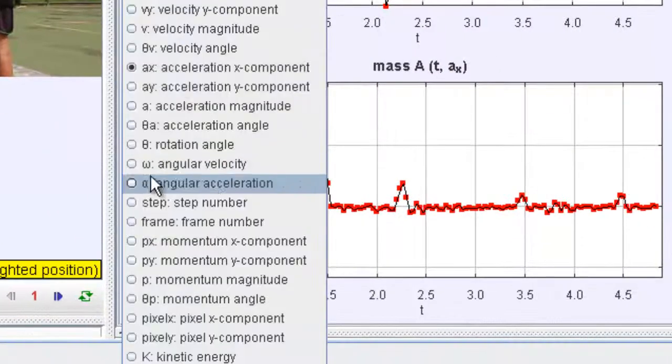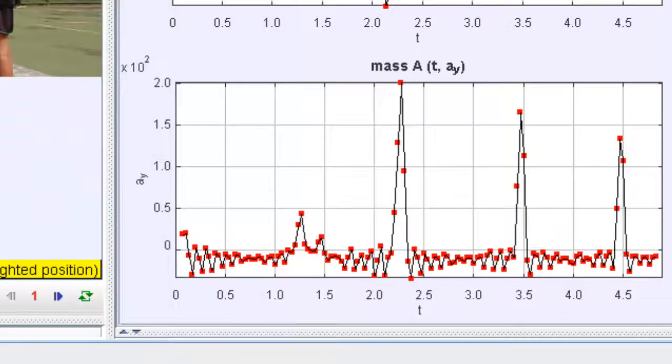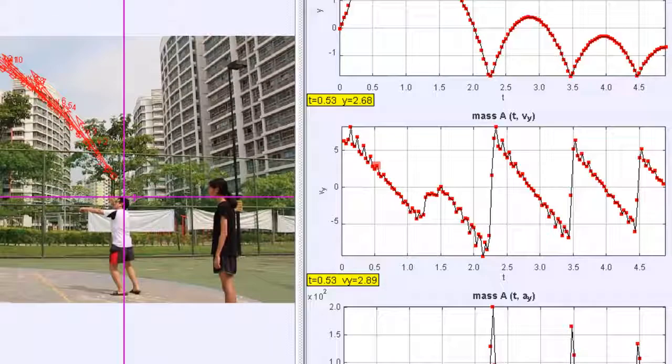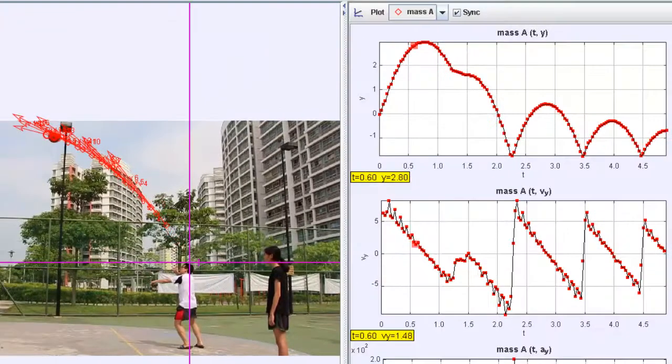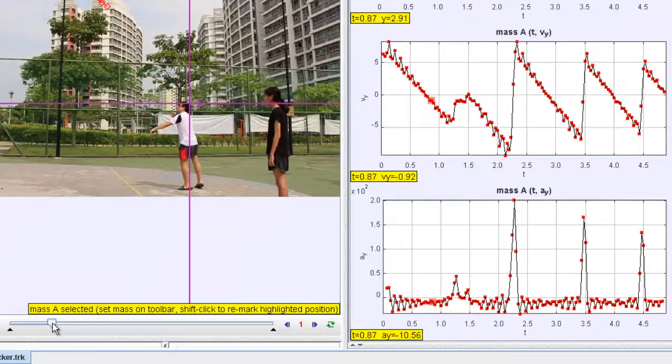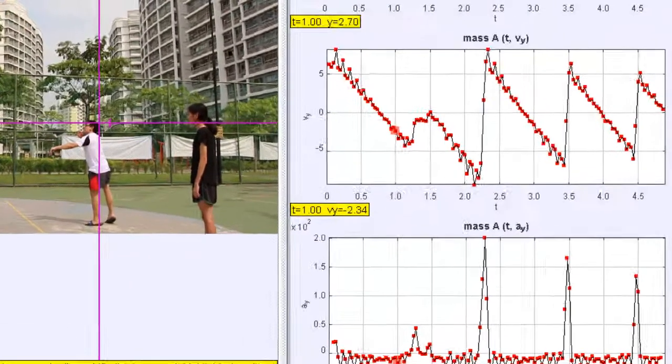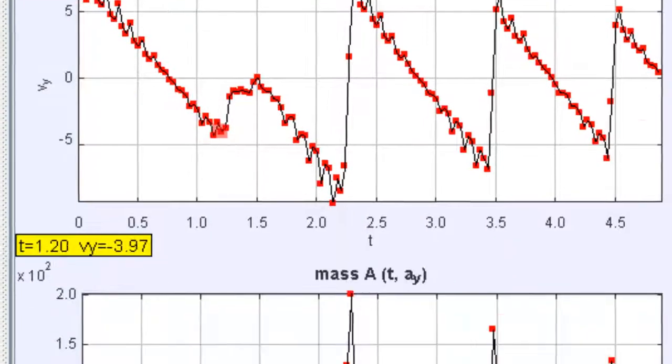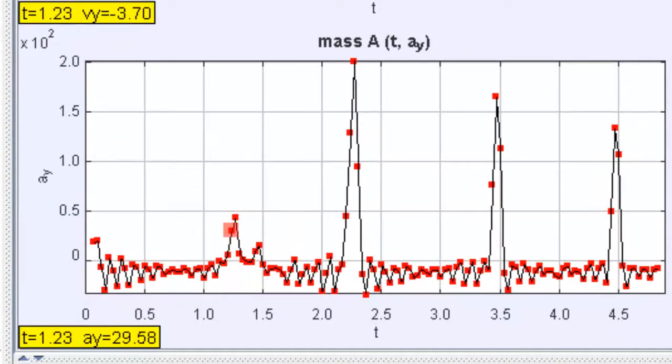vy and ay, so these are what we typically term as useful physics to be analyzed. So you can see that the y actually is increasing, and the increasing is actually—you can see from the y graph it is actually a quadratic graph. And ay should be relatively at a value of negative 9.81, which you can see from the gradient, but not so much from the ay graph. So there's a lot of fluctuation.